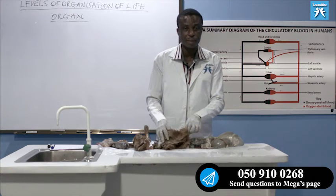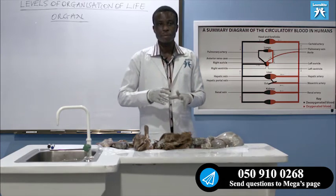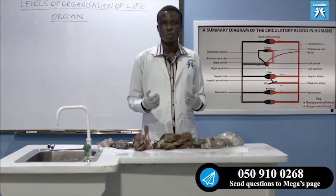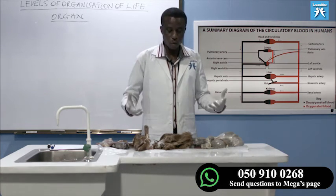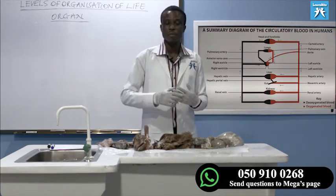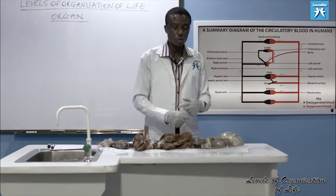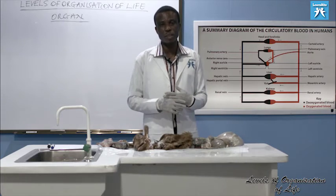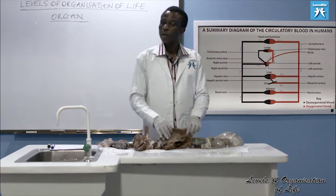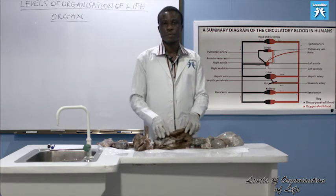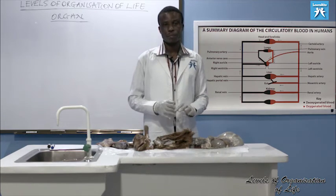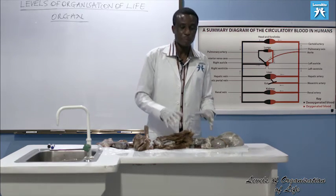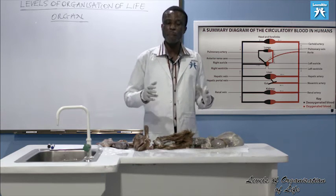I hope you have enjoyed the lesson. An organ is a group of tissues that come together to perform specific functions. Unlike tissue — which performs one specific function — an organ may perform more than one function. For instance, the liver performs many functions, and the skin performs protection, excretion, and temperature regulation. All organs are made up of tissues.